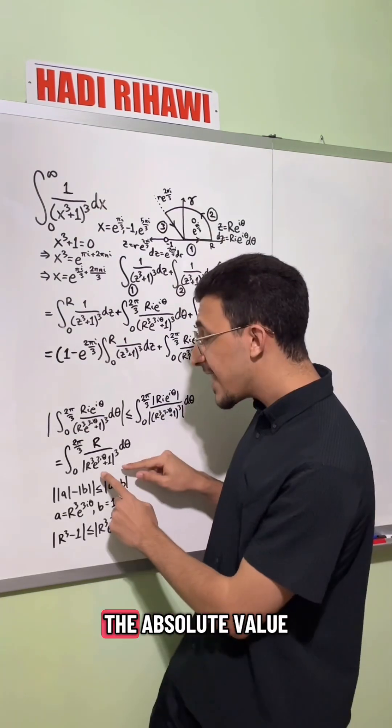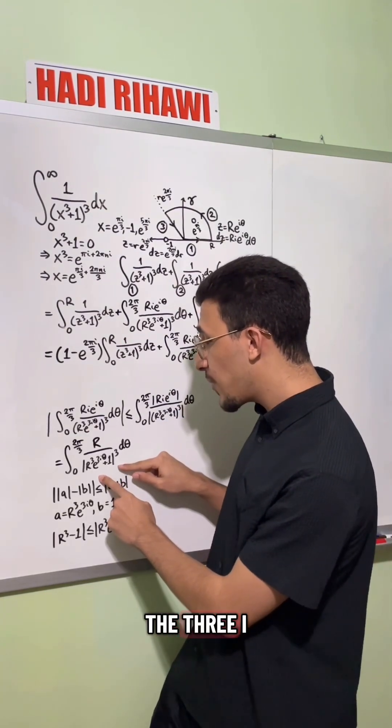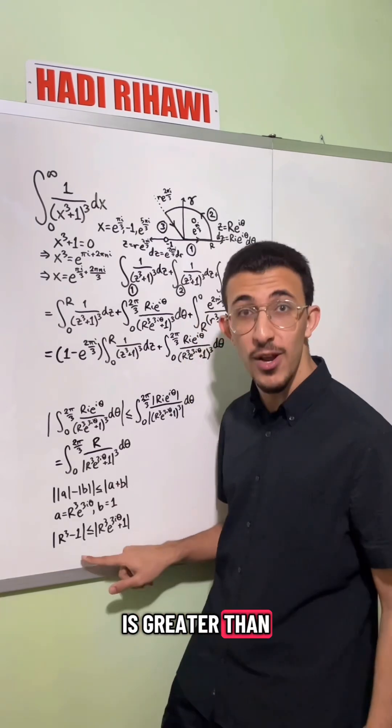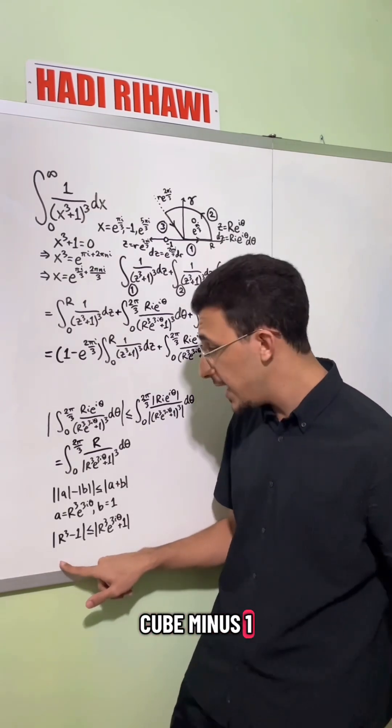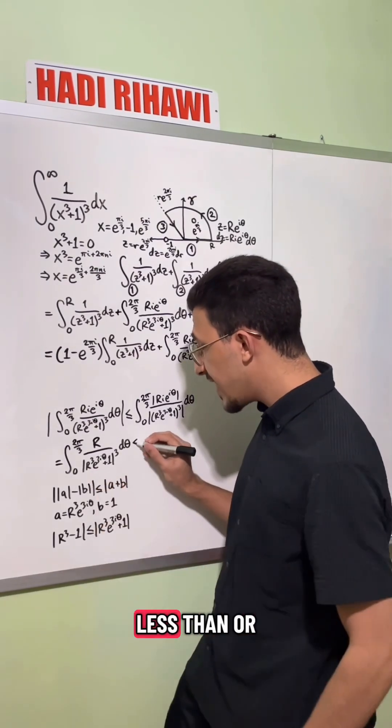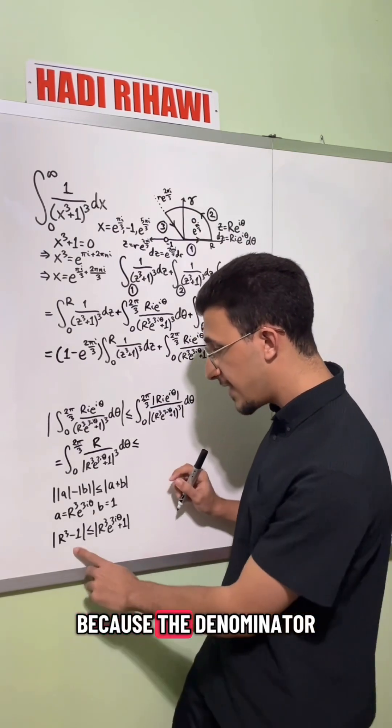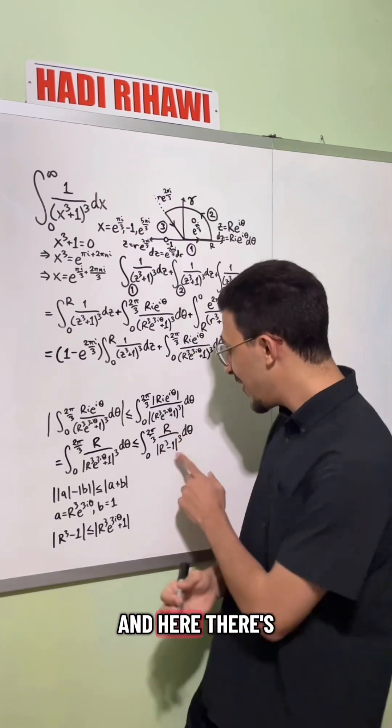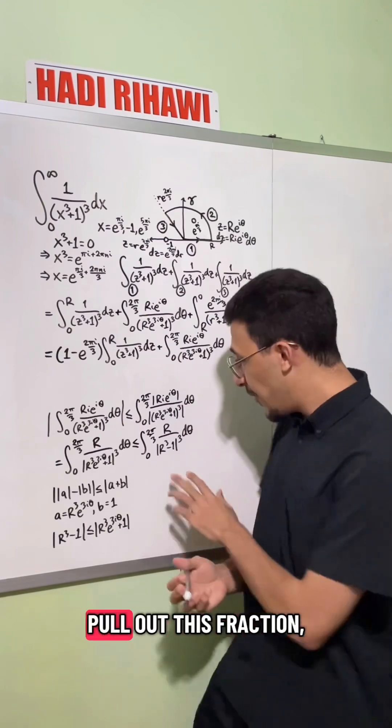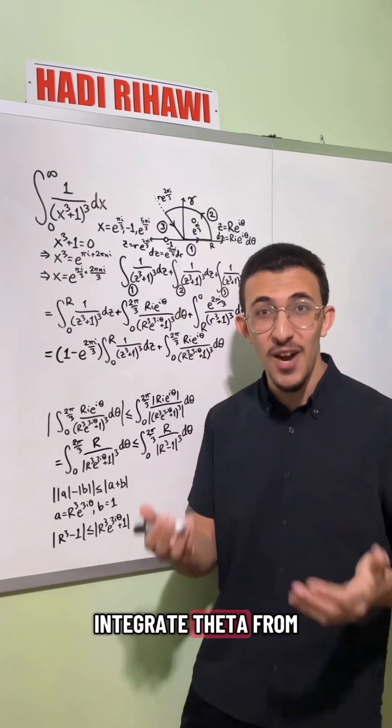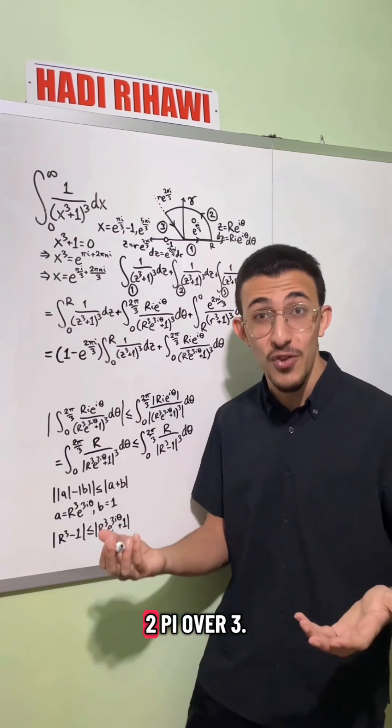By the reverse triangle inequality, we get that the absolute value of r cubed times e to the three i theta plus one is greater than or equal to the absolute value of r cubed minus one. And so this fraction will be less than or equal to, because the denominator got smaller. And here there's no theta dependence. So we can pull out this fraction and we'll just integrate theta from zero to two pi over three, which is just a factor of two pi over three.